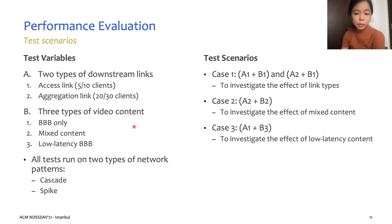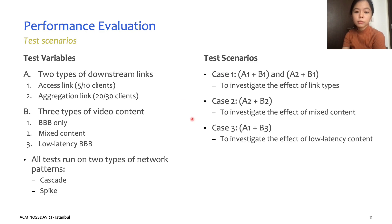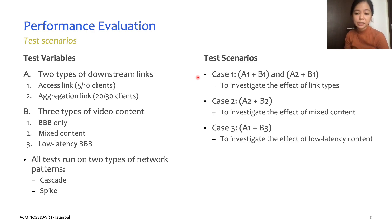Moving on to our performance evaluation, we identified three test scenarios to investigate and evaluate the performance of our proposed solution on the identified problem of competing clients concurrently streaming from the same server. We primarily vary the type of downstream link and the type of video content being streamed across these three test scenarios. In the first scenario, Case 1, we focus on investigating the effect on both types of downstream links, using only the Big Buck Bunny video streams and varying the type of link across the access and aggregate links.